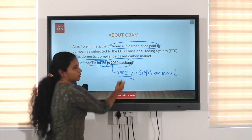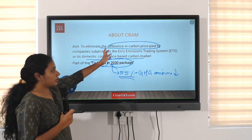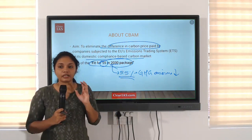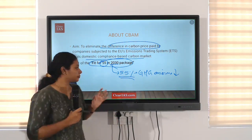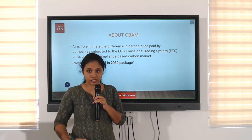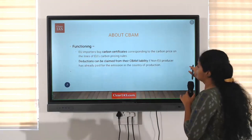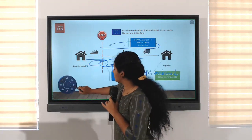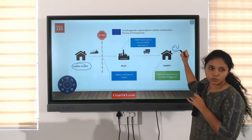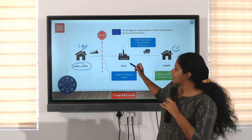Reducing greenhouse gas emissions by 55 percent by 2030 is the major commitment of the EU. As a part of it, CBAM was introduced — carbon-containing products from different countries will be taxed. If carbon emissions are already paid by companies in their respective countries, they will be eligible for deductions. This applies in the case of a non-EU supplier and EU buyer.